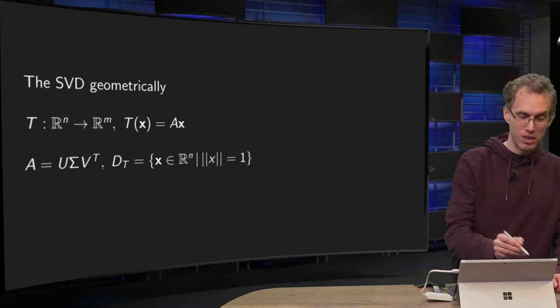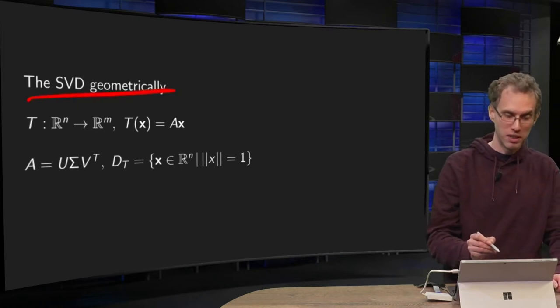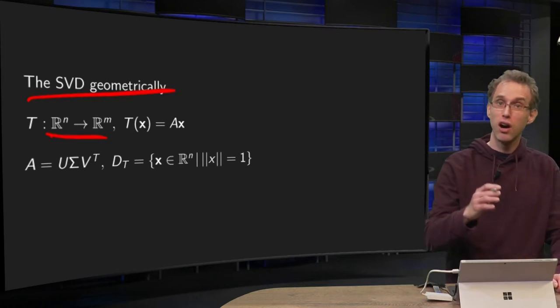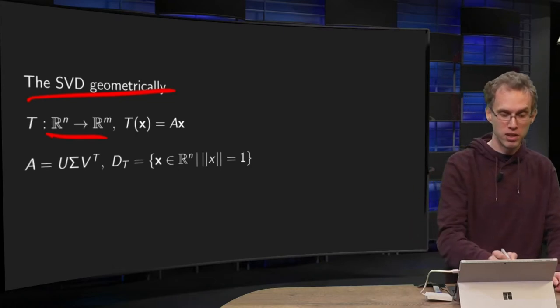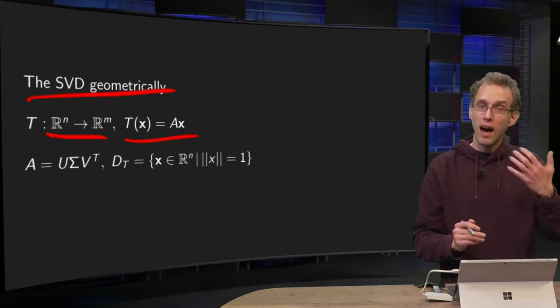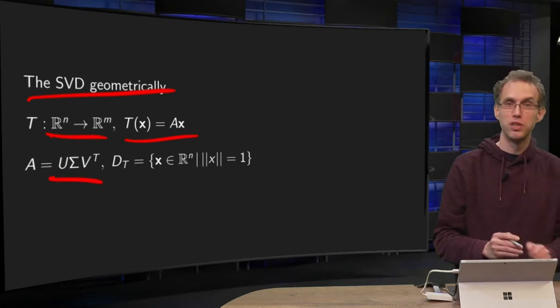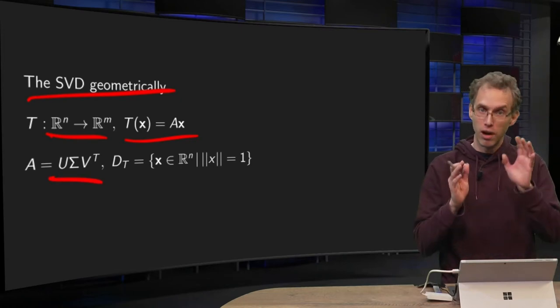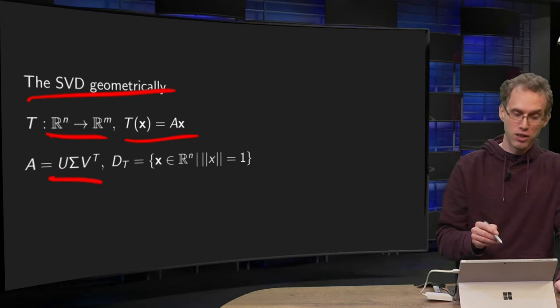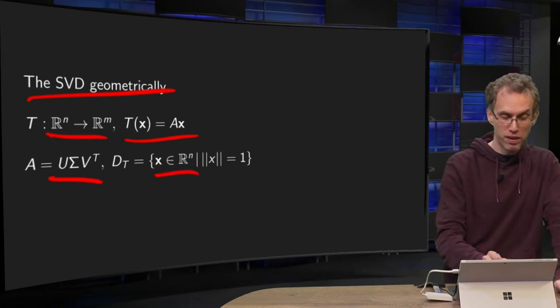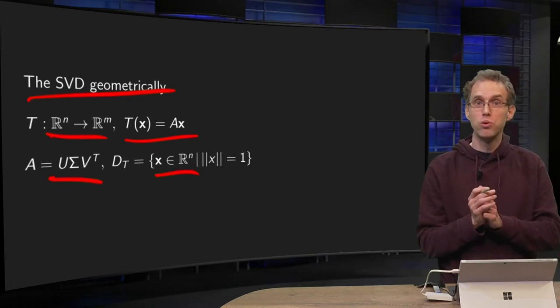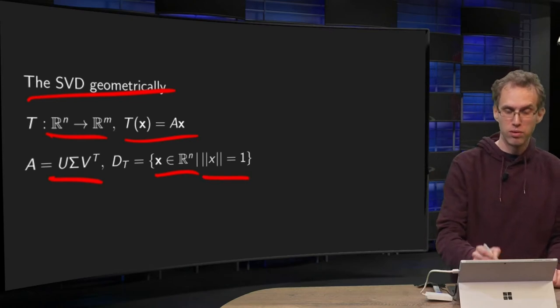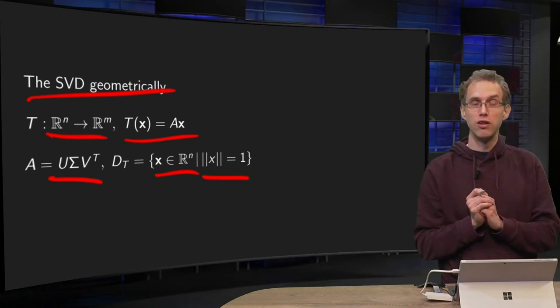So let's take a look at the singular value decomposition geometrically. So transformation T from R^n to R^m, T(x) equals A times x, and we assume that we have its singular value decomposition A = UΣV^T already. And as a domain, we have vectors in R^n and we look to normalized vectors with norm 1 in the domain.